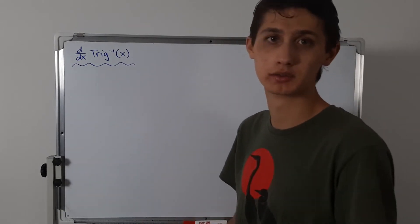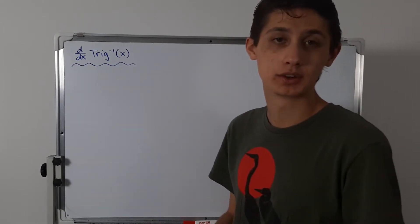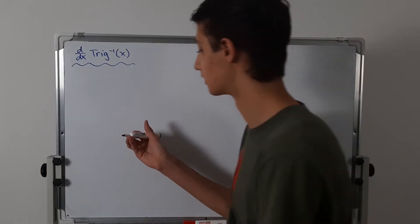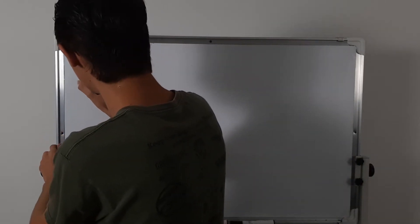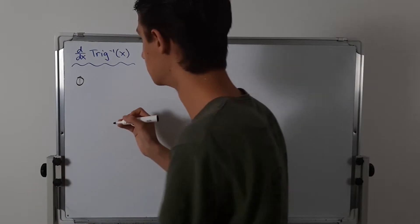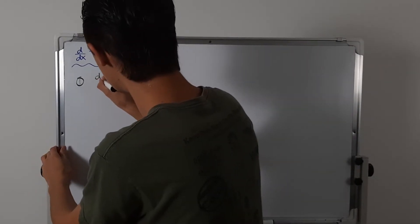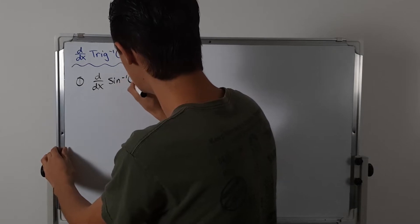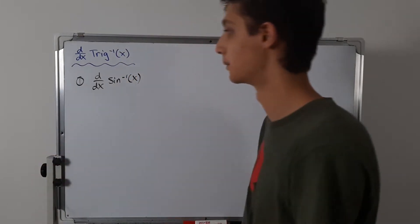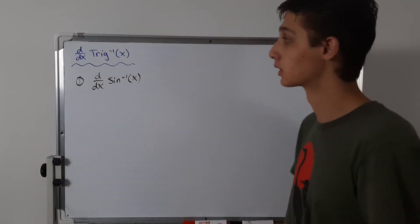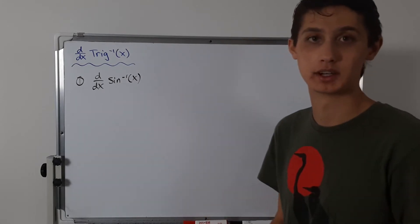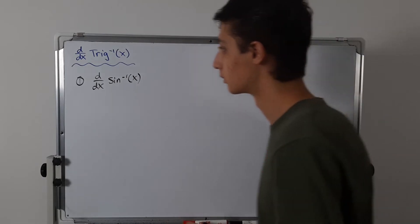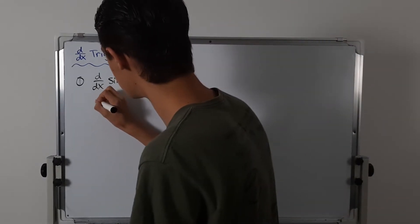The first trig function we are going to be talking about is inverse sine. We are going to be taking the derivative of inverse sine, or arc sine of x. What we are going to do is use implicit differentiation to figure this out. So let's start with y equals sine inverse of x.